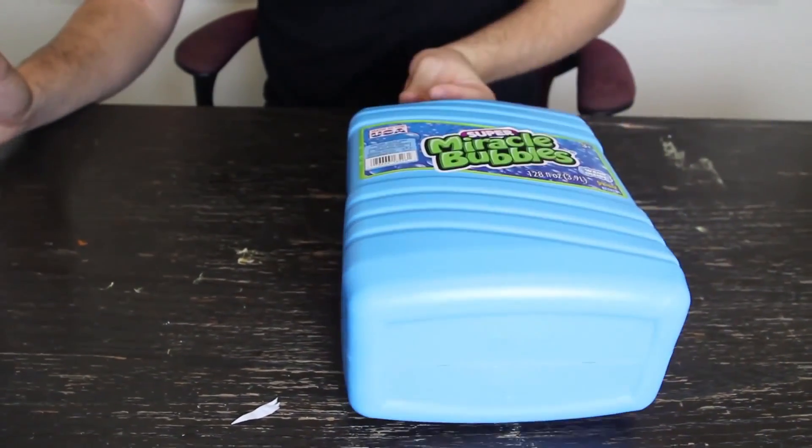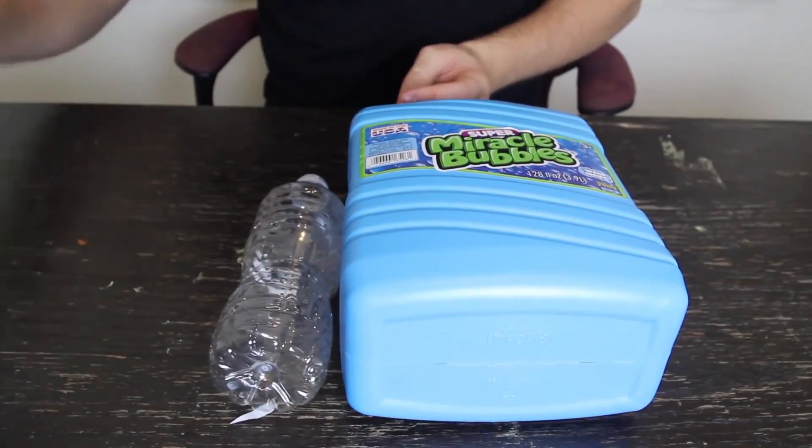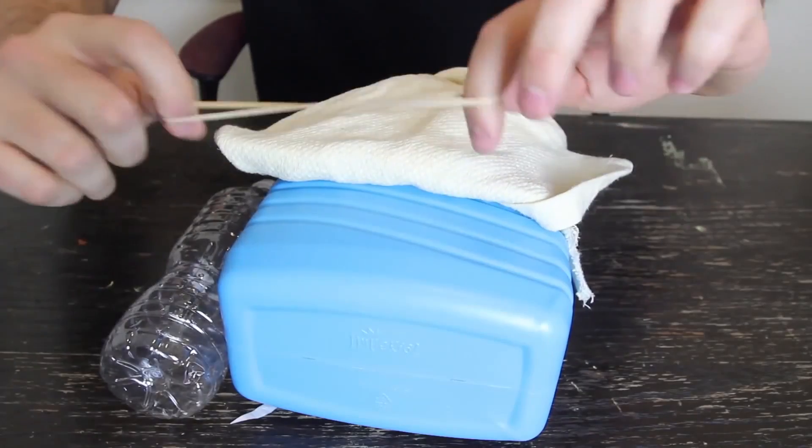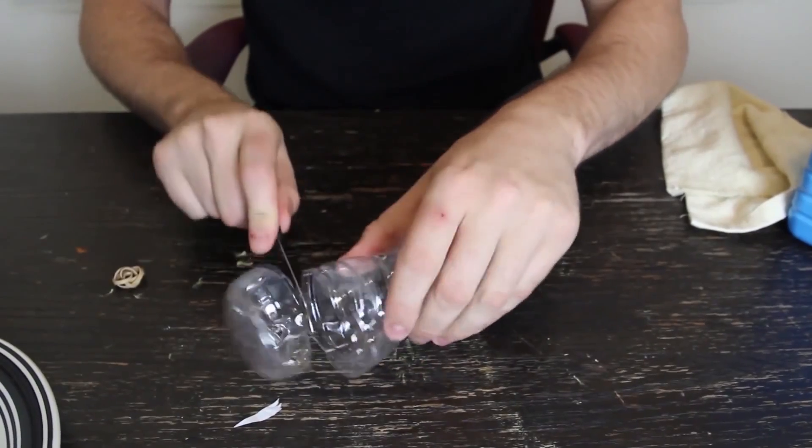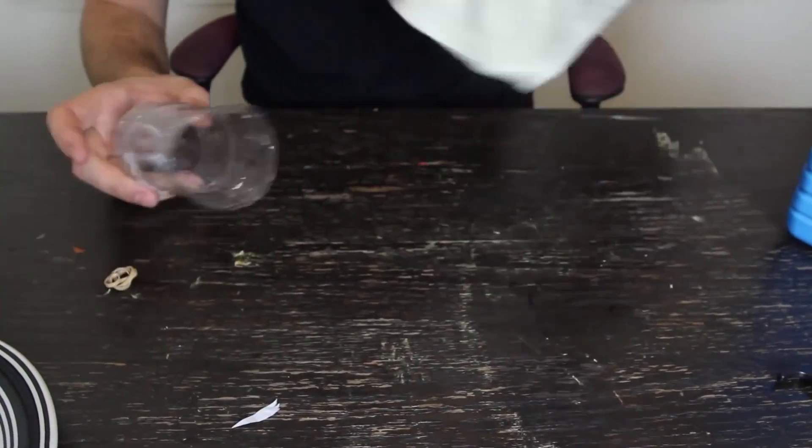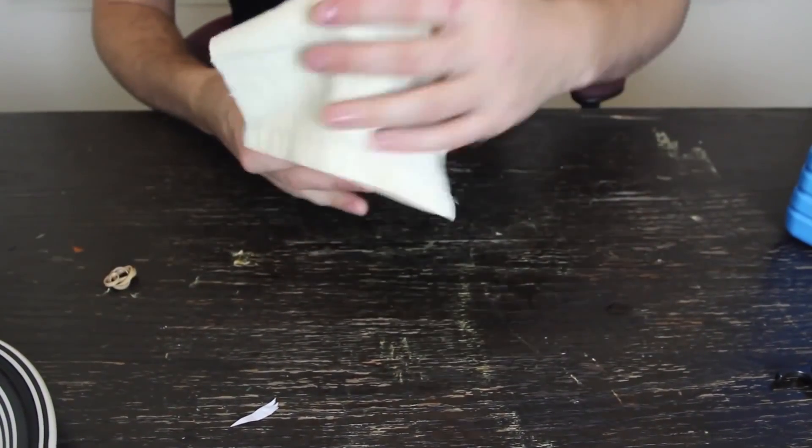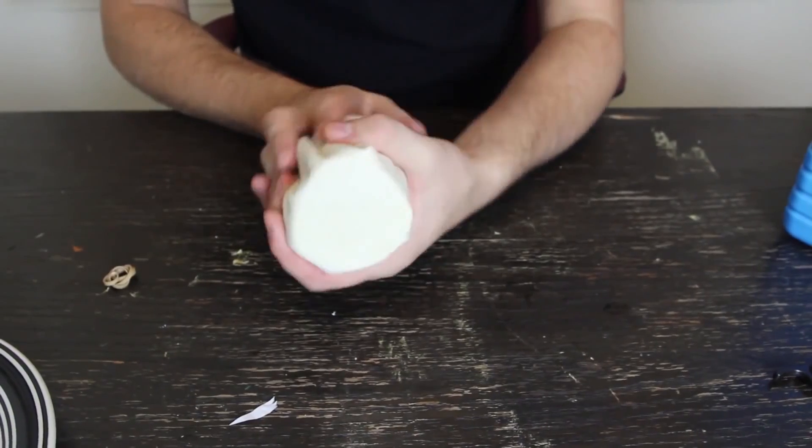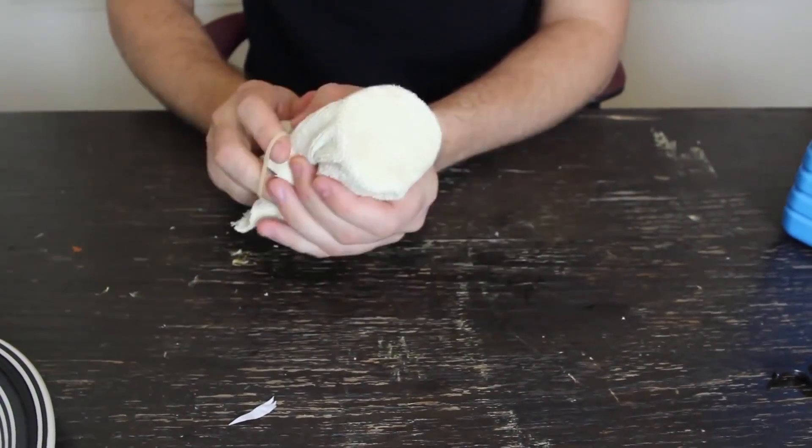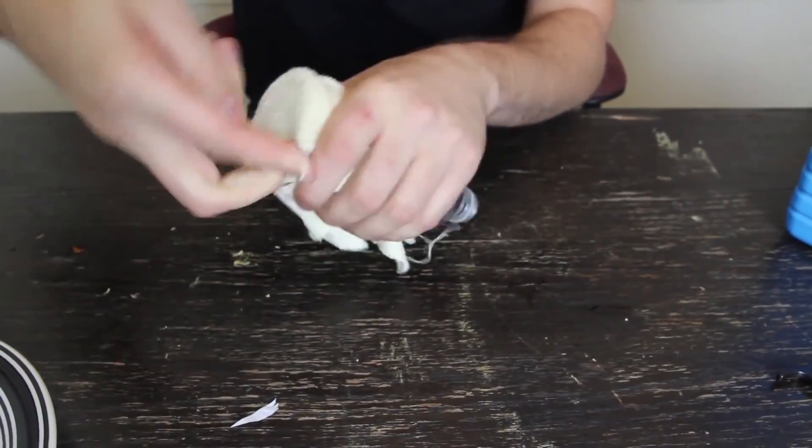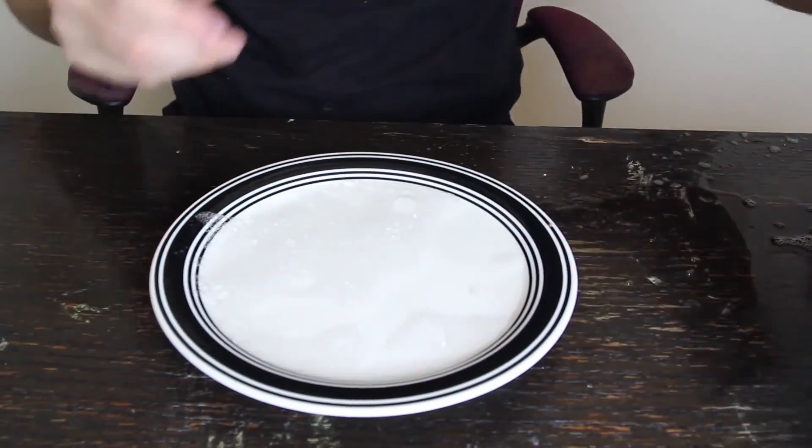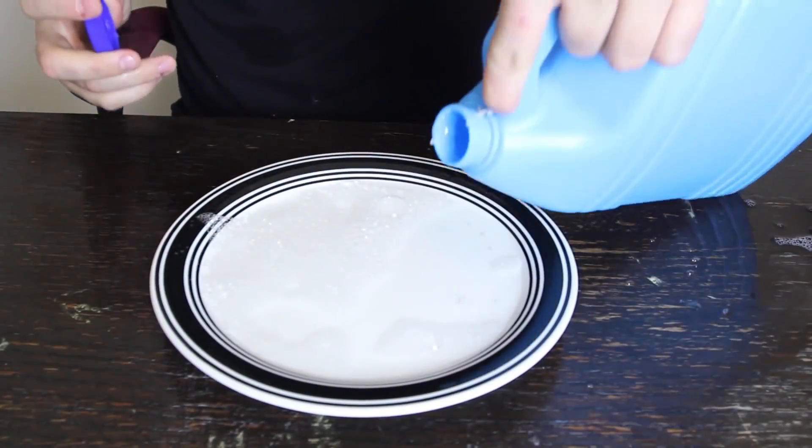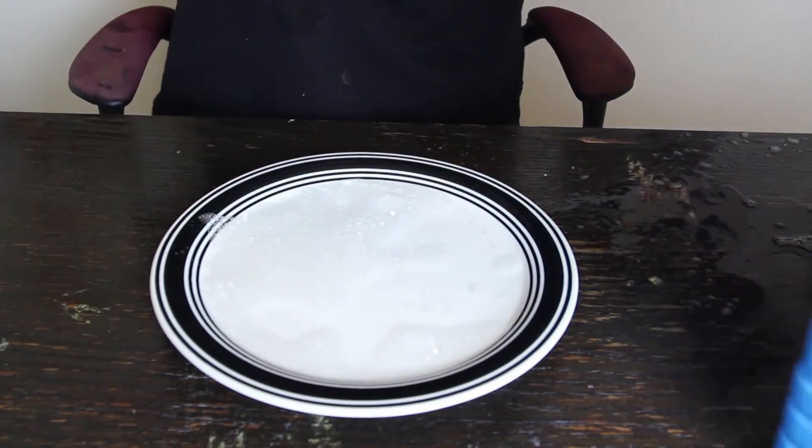For this experiment we're going to need soap bubble mixture, plastic bottle, a little towel, and a rubber band. First thing you want to do is cut the bottom of the bottle, just like that. Then we're going to bring a towel and put it like that on the bottle. And then grab a rubber band and put it on the bottle like that. Then we want to bring a plate and put some bubble mixture in there, just like that. Already did.